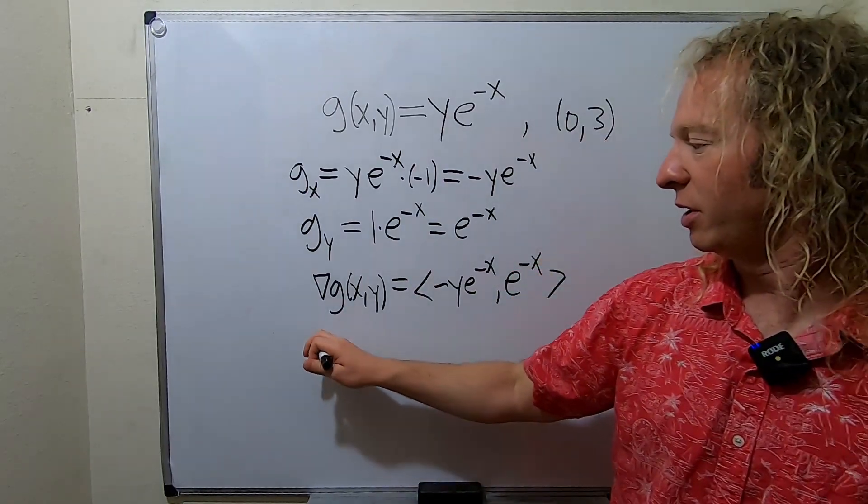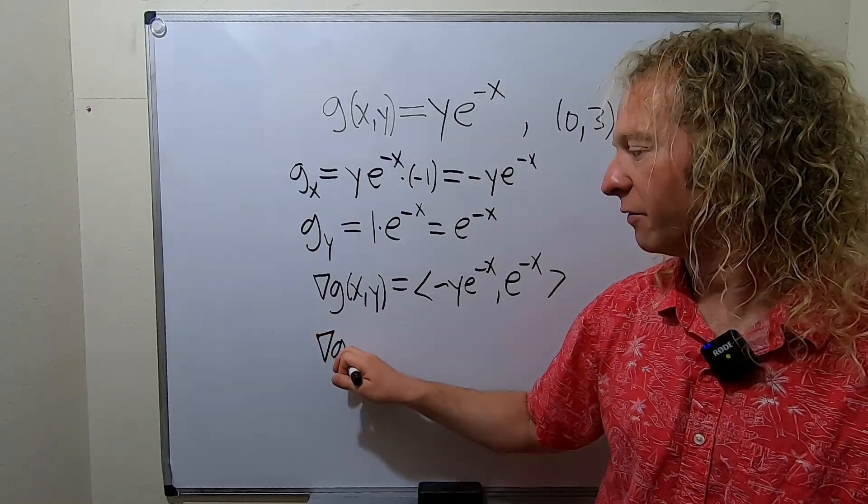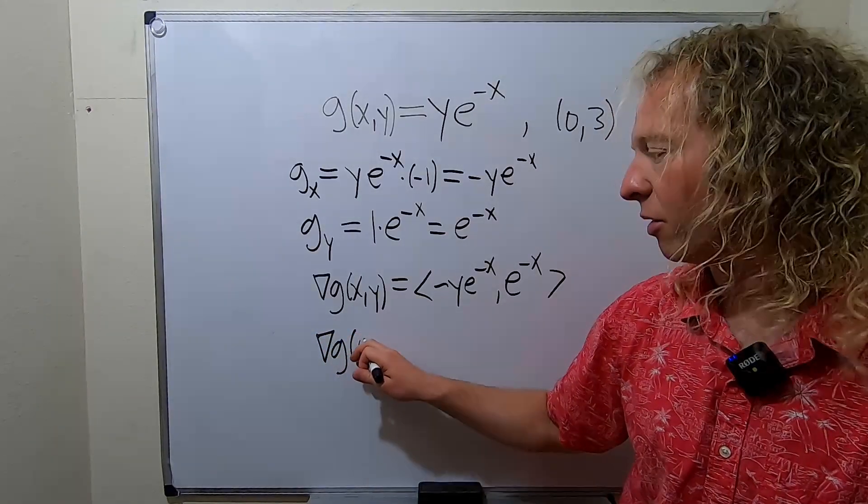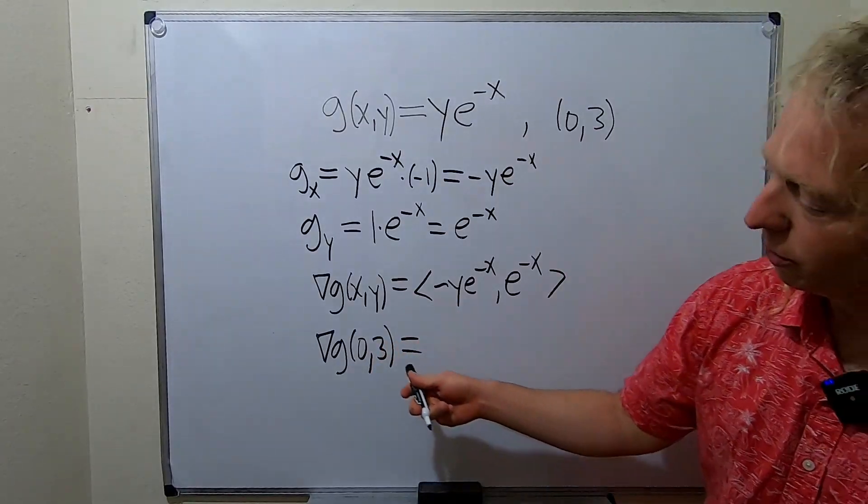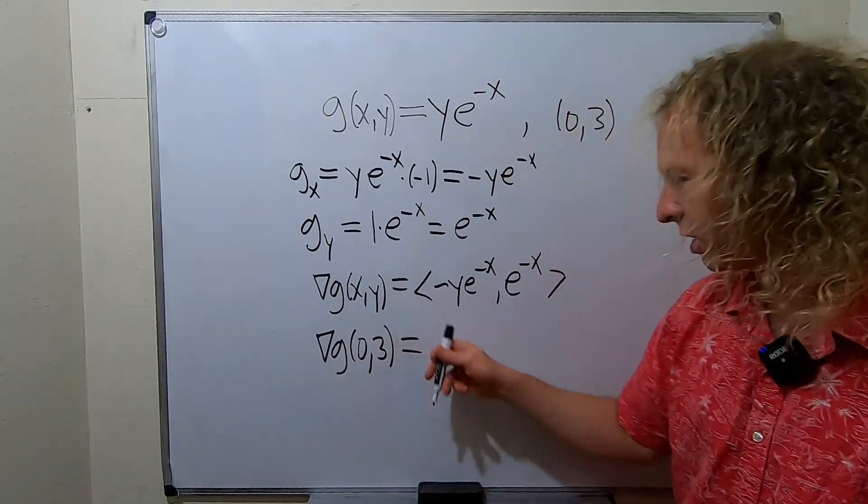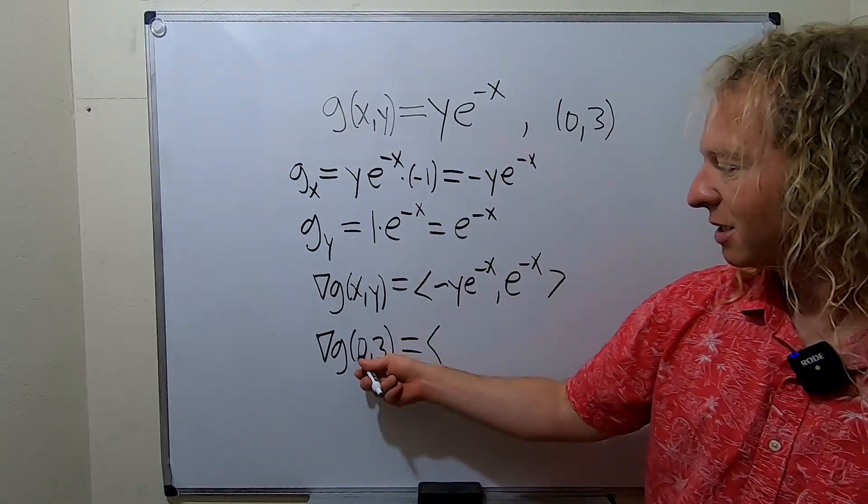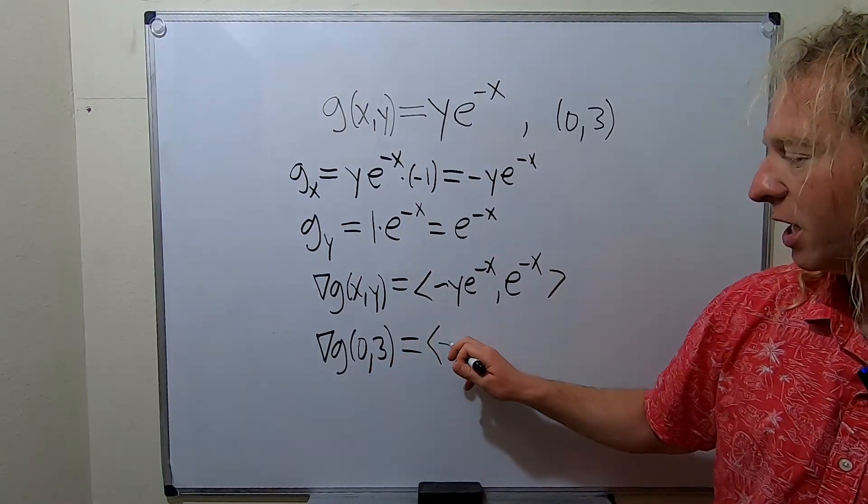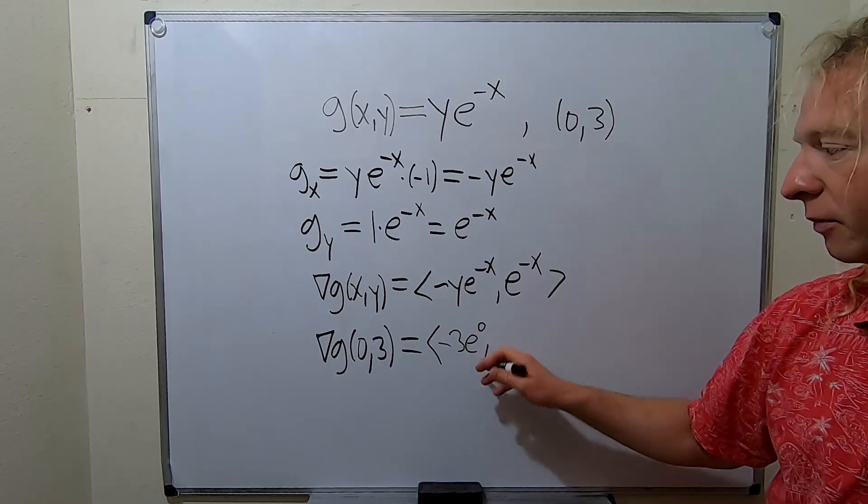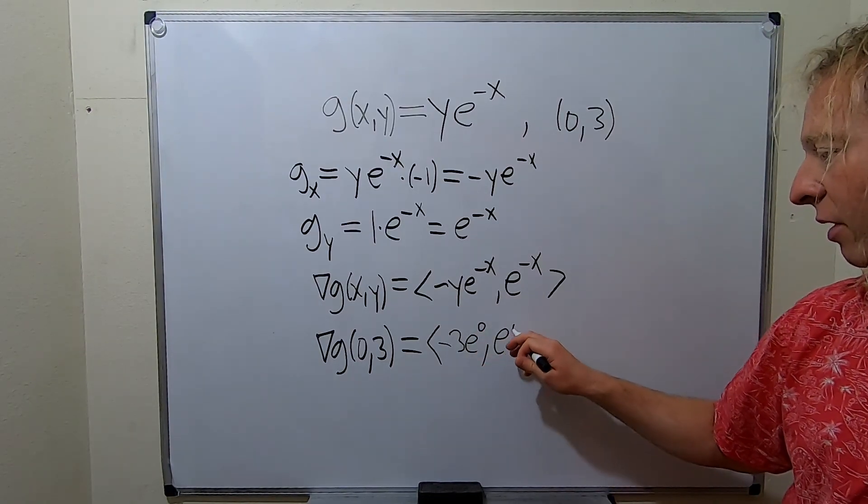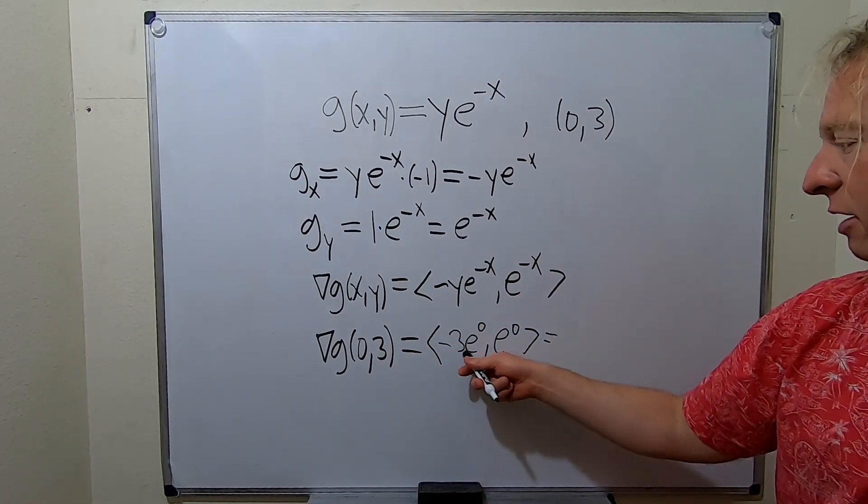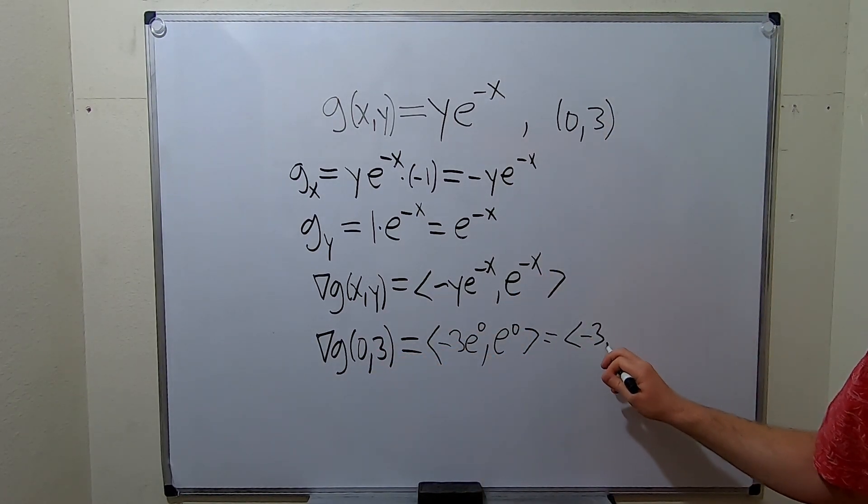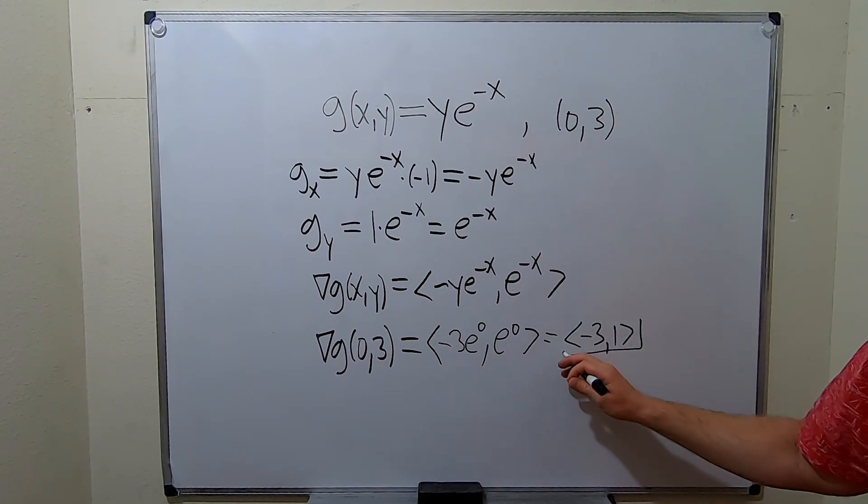We want the gradient at 0,3. So the gradient vector of g at 0 comma 3. The notation is really important. It's really important that you put the 0 and 3 here when you plug in the numbers. So x is 0, y is 3. So it'll be negative 3 e to the 0 and then e to the 0. E to the 0 is 1. So this is going to be negative 3 comma 1. So this is the gradient vector.